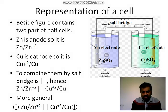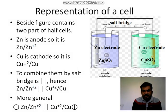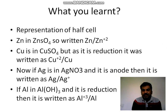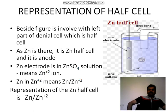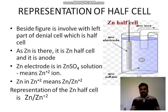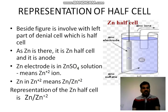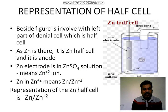So we come back to only one part, and that one part is nothing but the zinc half cell. What is a half cell? A half cell is nothing but one portion of the electrochemical cell.